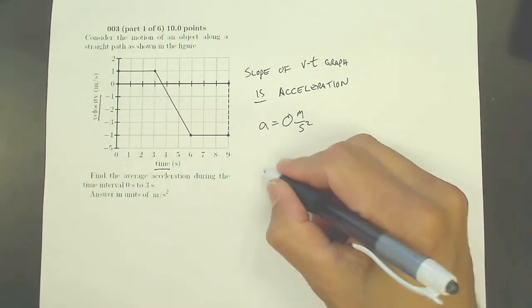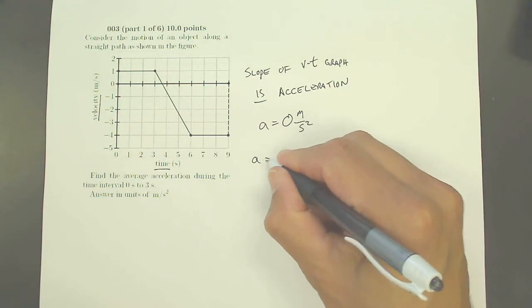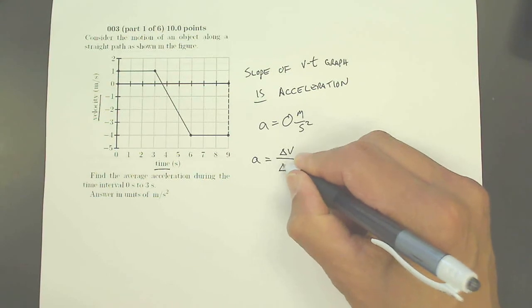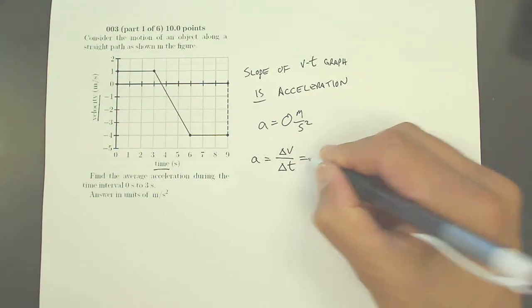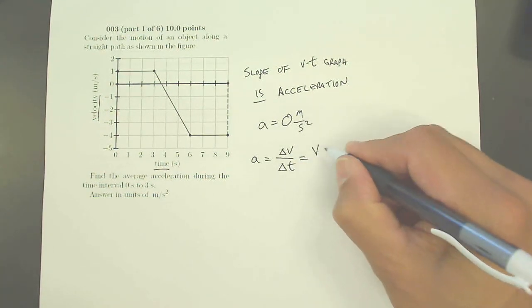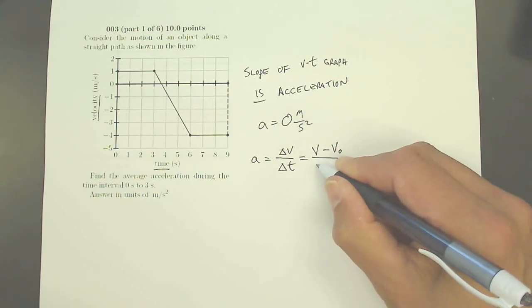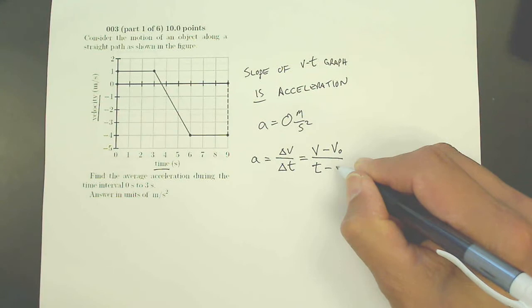The other way I could do it is to say that my average acceleration is my change in velocity over the amount of time that passes. In this case, my change in velocity is my final velocity minus my initial velocity divided by the elapsed time, so that's my final time minus my initial time.